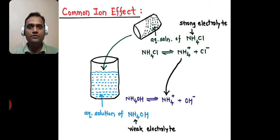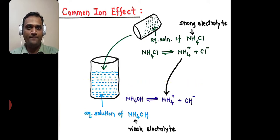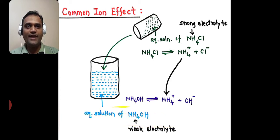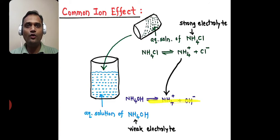To understand this concept, consider this diagram. In this diagram, we have a beaker. In this beaker, suppose we have an aqueous solution of ammonium hydroxide. We know that ammonium hydroxide is a weak electrolyte, and as a weak electrolyte in aqueous solution, it undergoes partial ionization to form NH4+ and OH−.